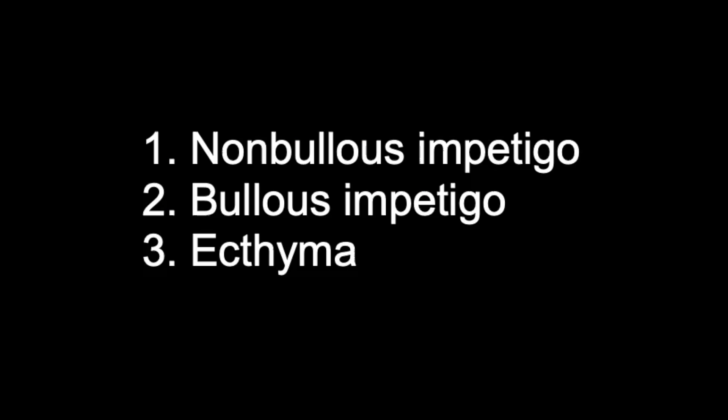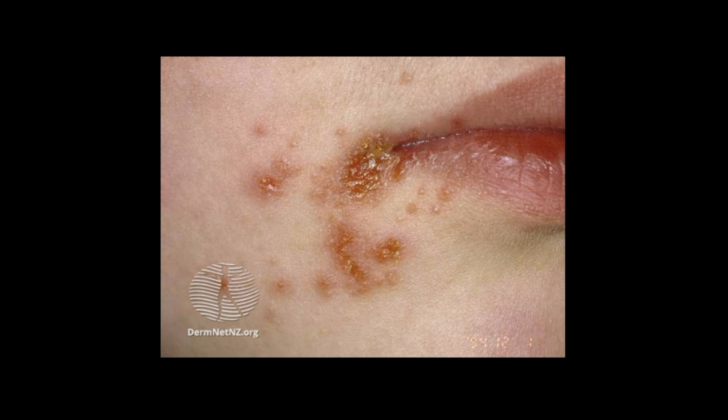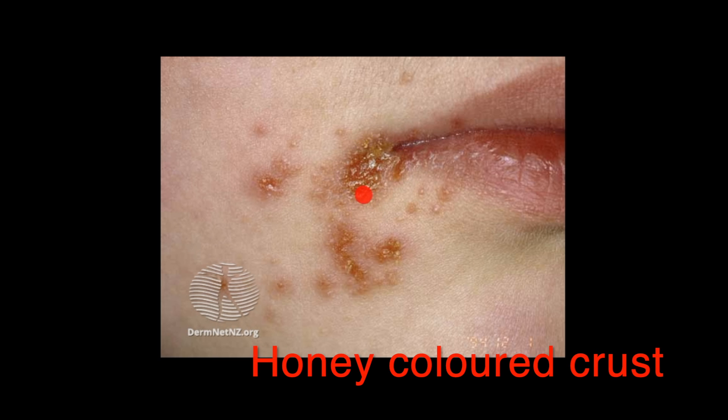There are three broad types of impetigo: non-bullous impetigo, bullous impetigo, and ecthyma. In non-bullous impetigo, staphylococci and streptococci invade a site of minor trauma where exposed proteins allow the bacteria to adhere. It starts as a pink macule that evolves into a vesicle or pustule, then into erosions with a honey-coloured crust.